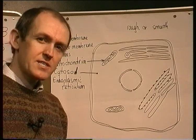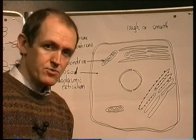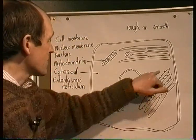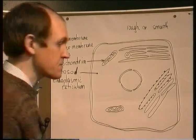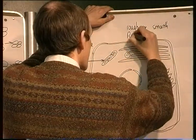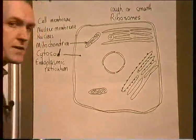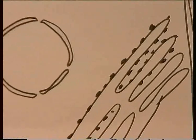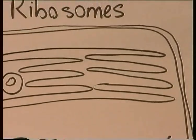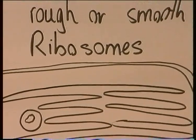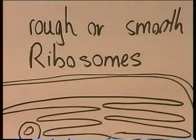What these knobbly bits are is actually an organelle in their own right — a very important one — and they are in fact called ribosomes. So a smooth endoplasmic reticulum is made rough by the presence of ribosomes, making smooth endoplasmic reticulum rough.